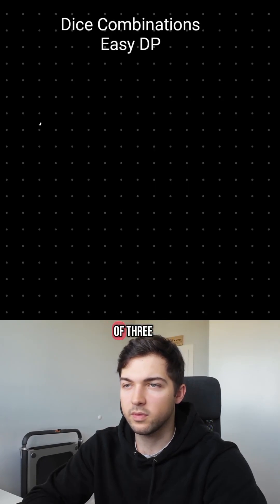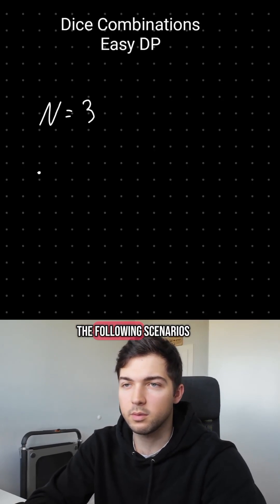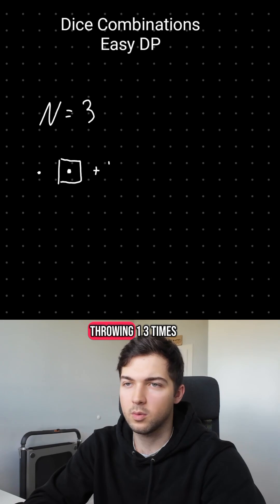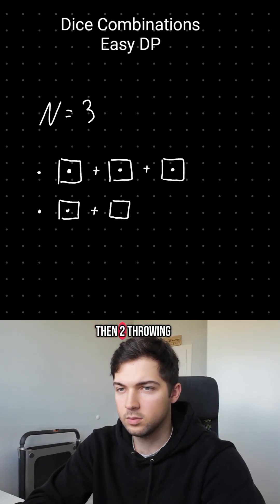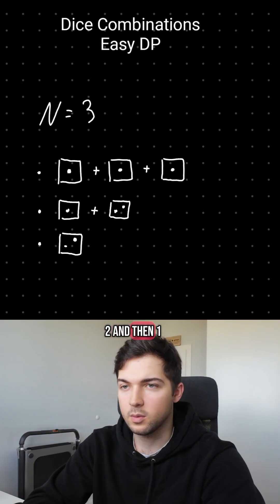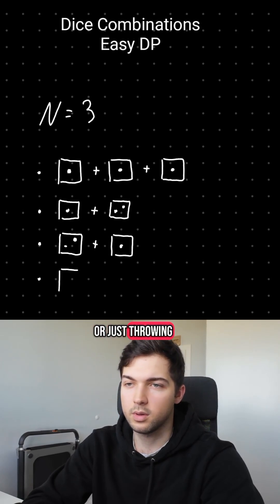For example, to get the sum of 3 we could have the following scenarios: throwing 1 three times, throwing 1 and then 2, throwing 2 and then 1, or just throwing 3.